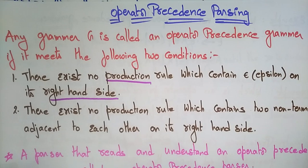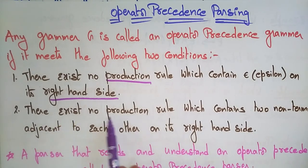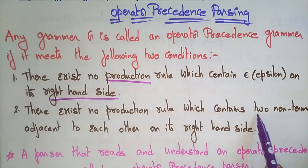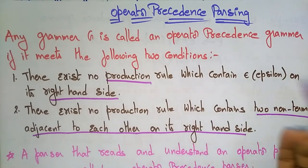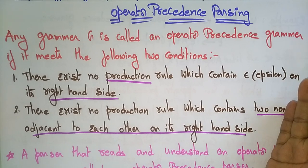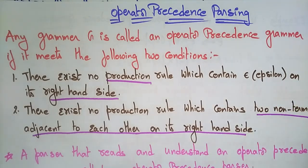The second condition is: there exists no production rule which contains two non-terminals adjacent to each other on its right hand side. Whatever elements are present on the right hand side, no two non-terminals — which are the letter symbols we use — should be side by side.